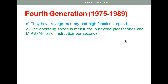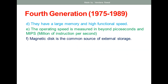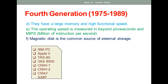The operating speed was measured beyond picoseconds and in MIPS — millions of instructions per second. Magnetic disk is the common source of external storage in this generation. For secondary storage, magnetic disk was used. So if you want to save an image, file, or folder, the concept of magnetic disk was used for saving that information. This is one important point of this generation.